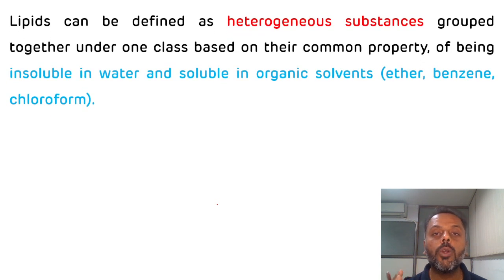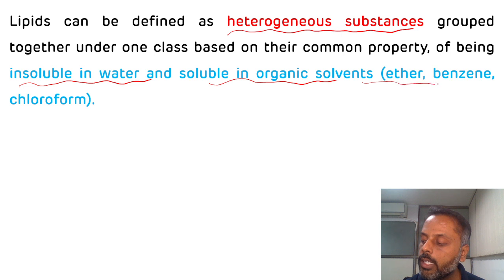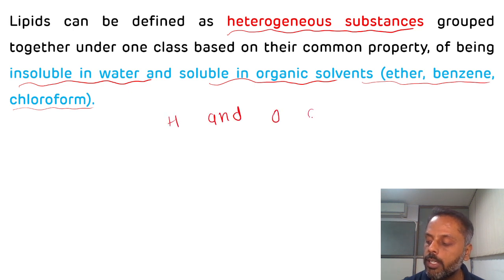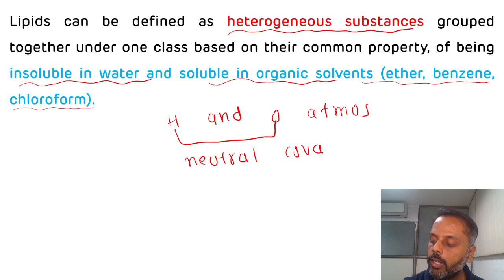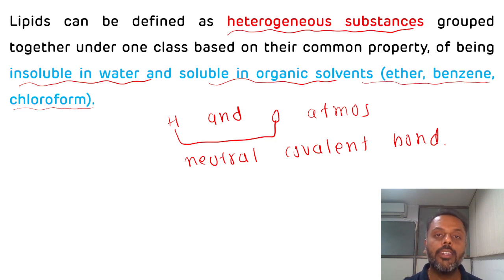Lipids are basically a heterogeneous group of substances — heterogeneous means diverse in characteristic. They are insoluble in water but soluble in various organic solvents like ether, chloroform, and benzene. Lipids are mainly made up of hydrogen and oxygen atoms, linked together with the help of nonpolar covalent bonds, which are responsible for the non-polar characteristic of lipid.